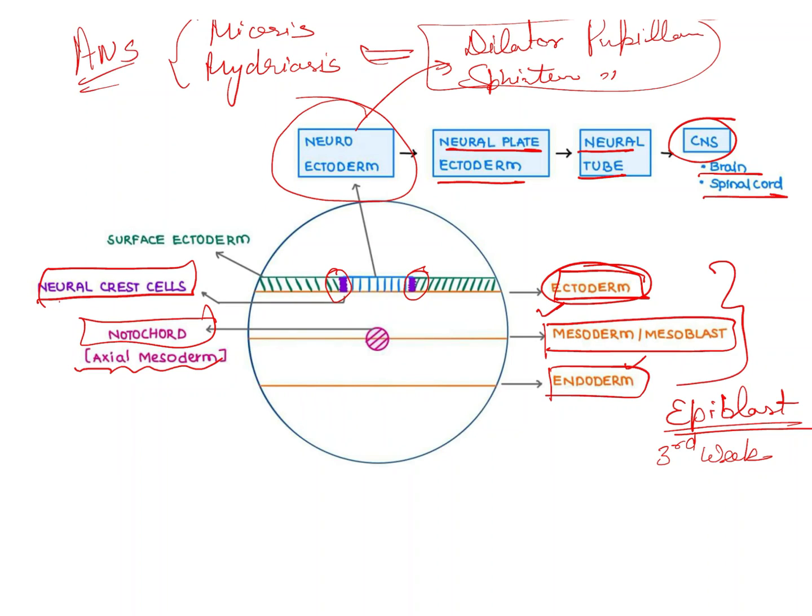Neural crest cells are involved in formation of many other structures. I will mention a few: the peripheral nervous system, mesoderm of the eye, most skull bones, and pharyngeal arch bones.